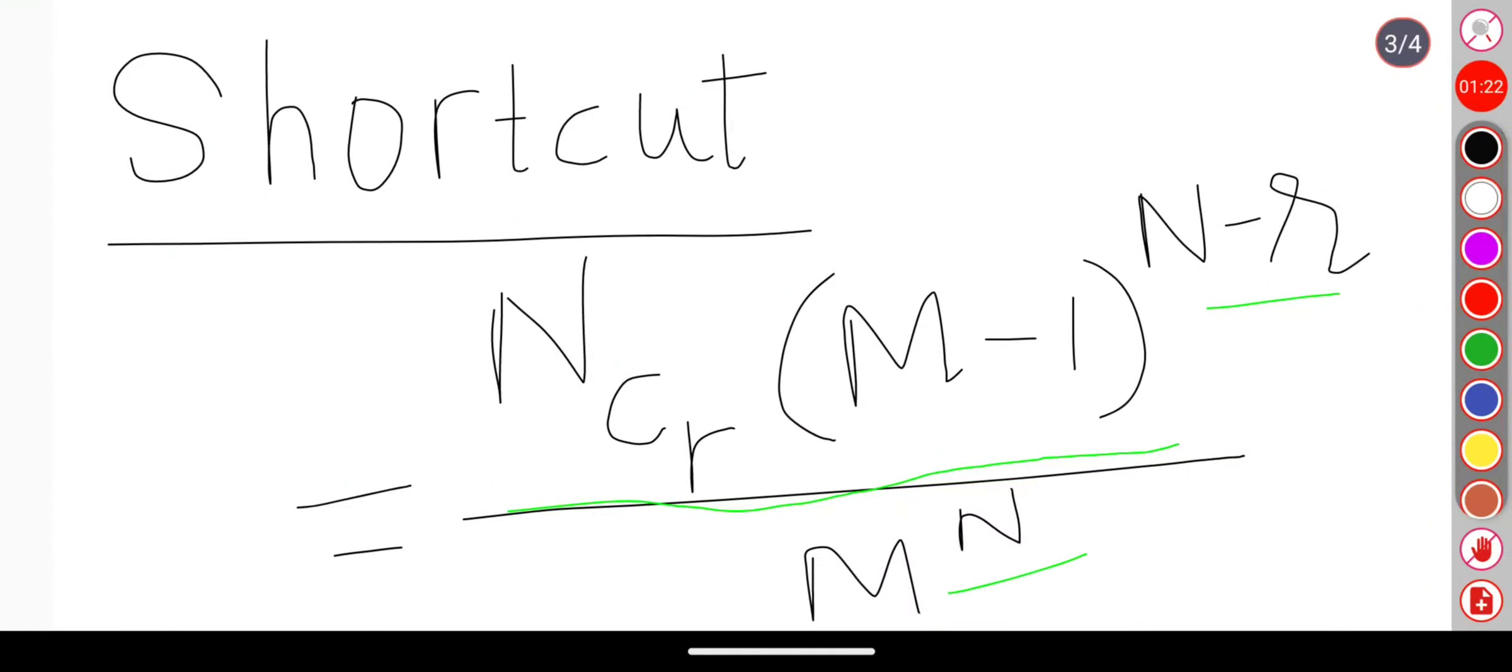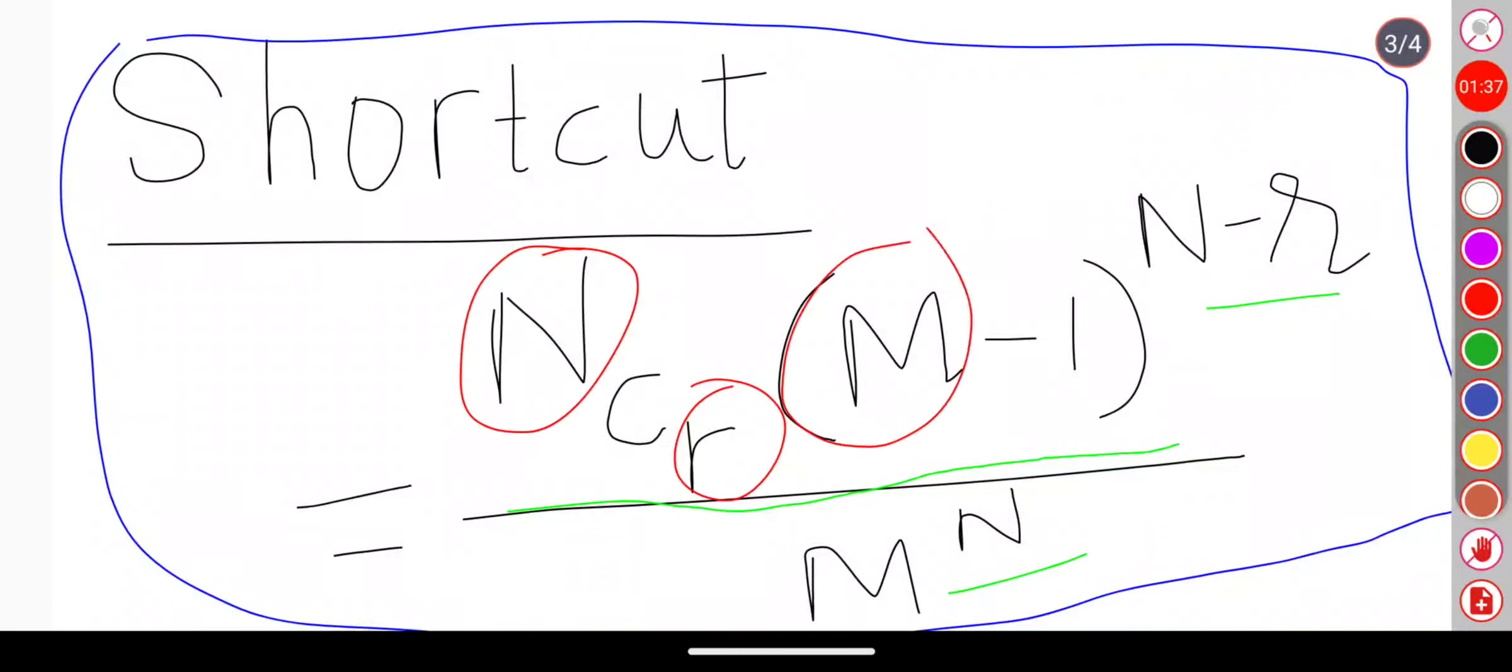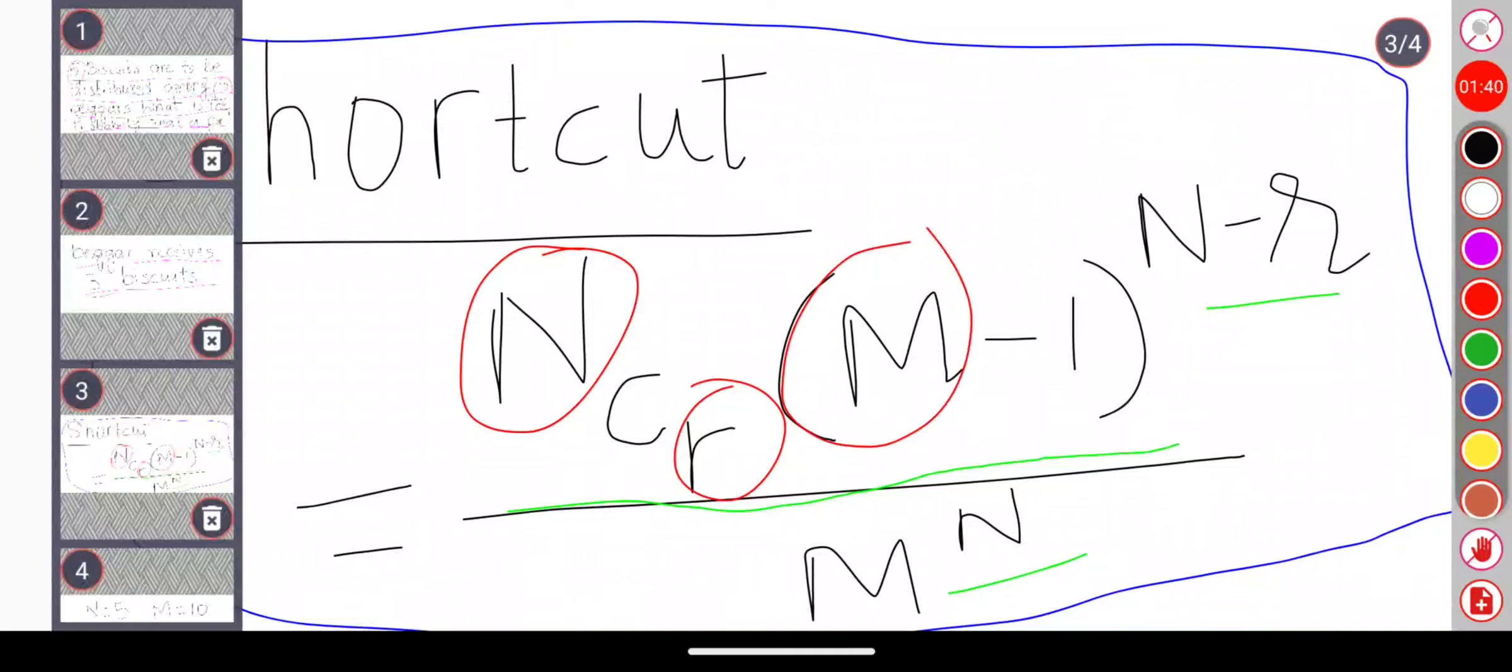So what we need to know to solve this using the shortcut? We need to know N value, we need to know R value, we need to know M value. If we know N, M, and R values we can solve this.